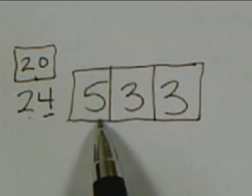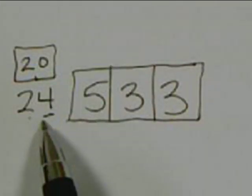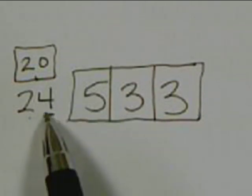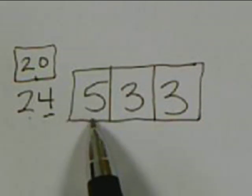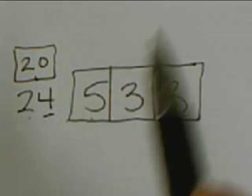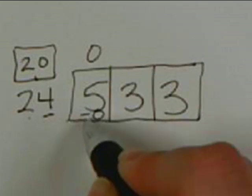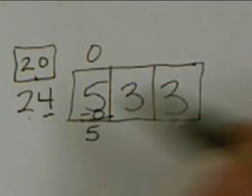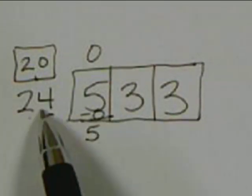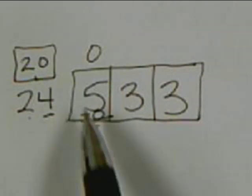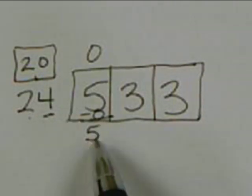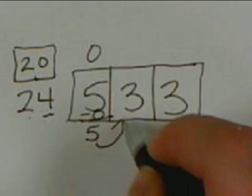Now they say, is 5 less than my divisor? Yes, it is. So I know nothing times 24 will get me smaller than 5 except for 0. So 0 goes at the top of the box. 0 times 24 is 0. 5 minus 0 is 5. Now they need to ask, is 5 less than 24? Yes, it is. And it's one digit, so we don't have to do anything special. We can just move it to the next box.